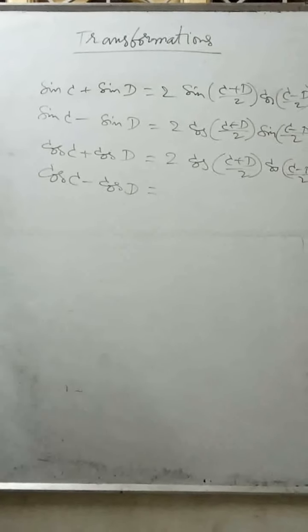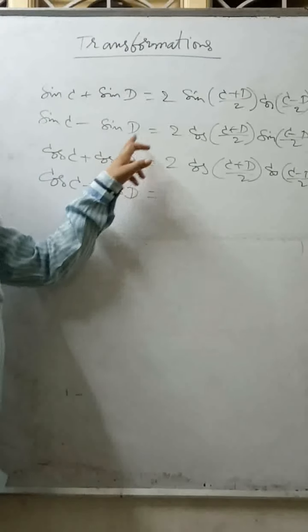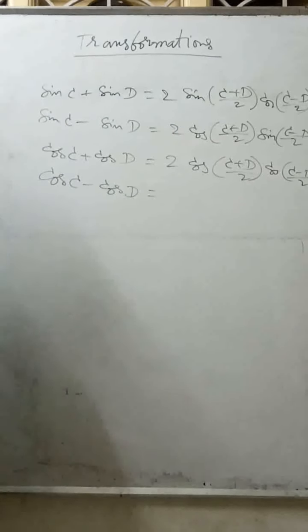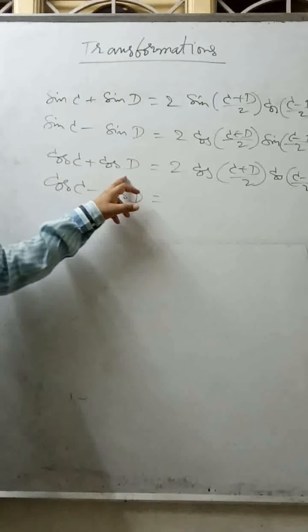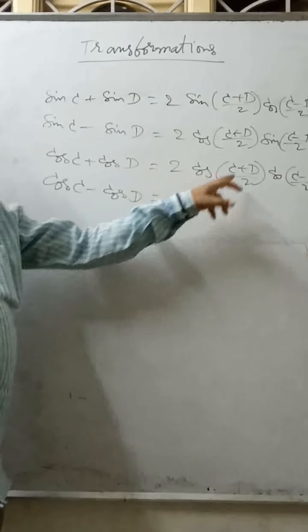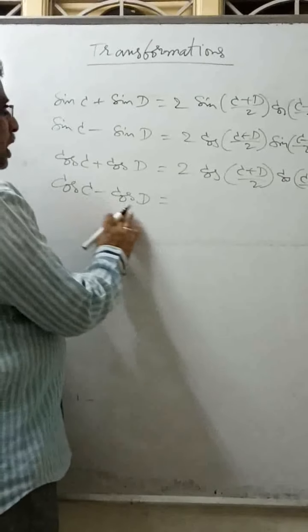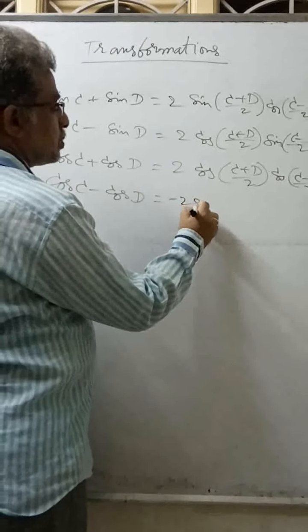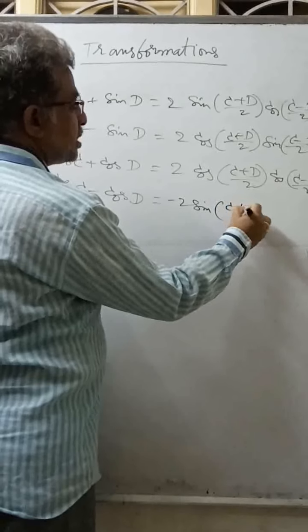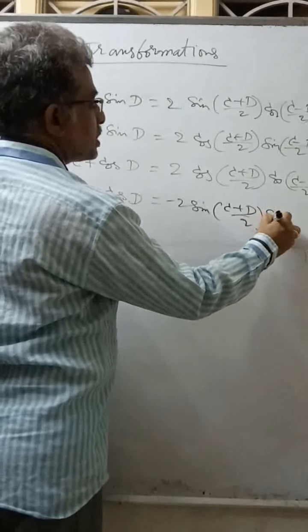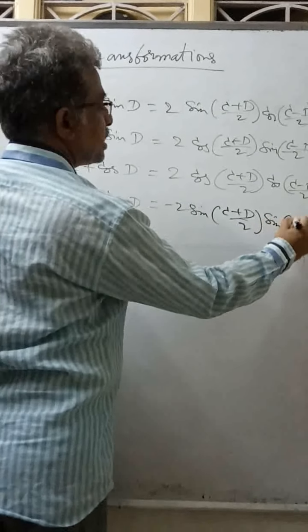The four sum-to-product transformation formulas: sin C plus sin D equals 2 sin((C+D)/2) cos((C-D)/2); sin C minus sin D equals 2 cos((C+D)/2) sin((C-D)/2); cos C plus cos D equals 2 cos((C+D)/2) cos((C-D)/2); cos C minus cos D equals minus 2 sin((C+D)/2) sin((C-D)/2). We are writing these now.